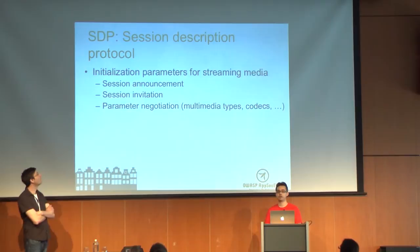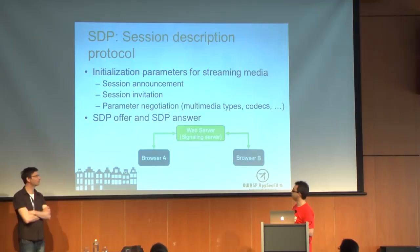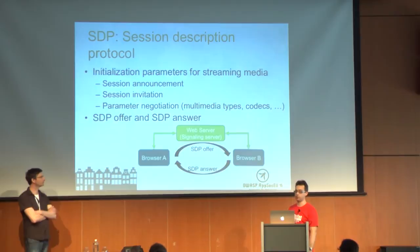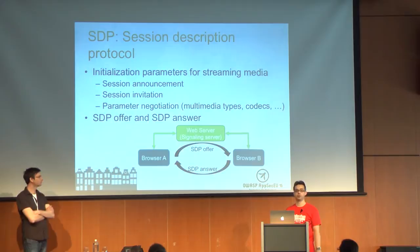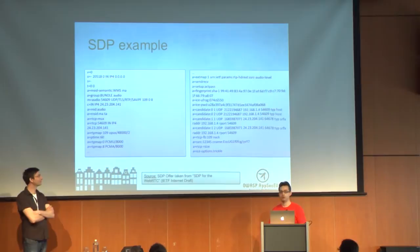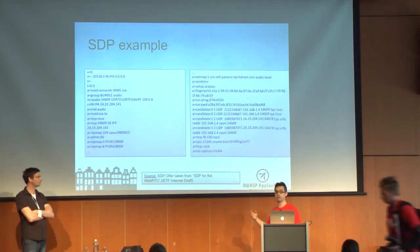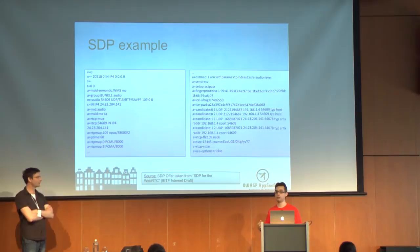The Session Description Protocol works like this: browser A and browser B use the signaling channel to send their capabilities — supported codecs, multimedia types, device information — as offers and answers. Based on that exchange, they can determine whether the two endpoints are compatible. Importantly, SDP is represented as a string within WebRTC. Since you're passing that string in JavaScript, you can manipulate it — and in the future, libraries could add filters or change the SDP information, which is important for our security assessment.